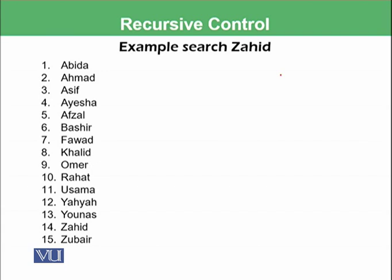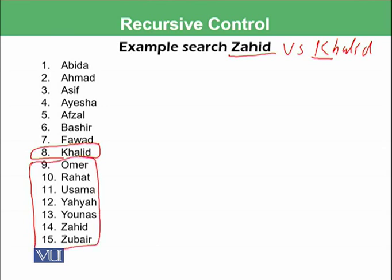Let's have these 15 names — Abida, Ahmad, Asif, Aisha, Afzal, Bashir, and so on — and we want to search for Zahid. First we find the midpoint of the list, which is Khalid. We compare Khalid with Zahid: Z has a larger ASCII code than K, so our required information lies in the right sub-list. We leave the left portion and will not search there.